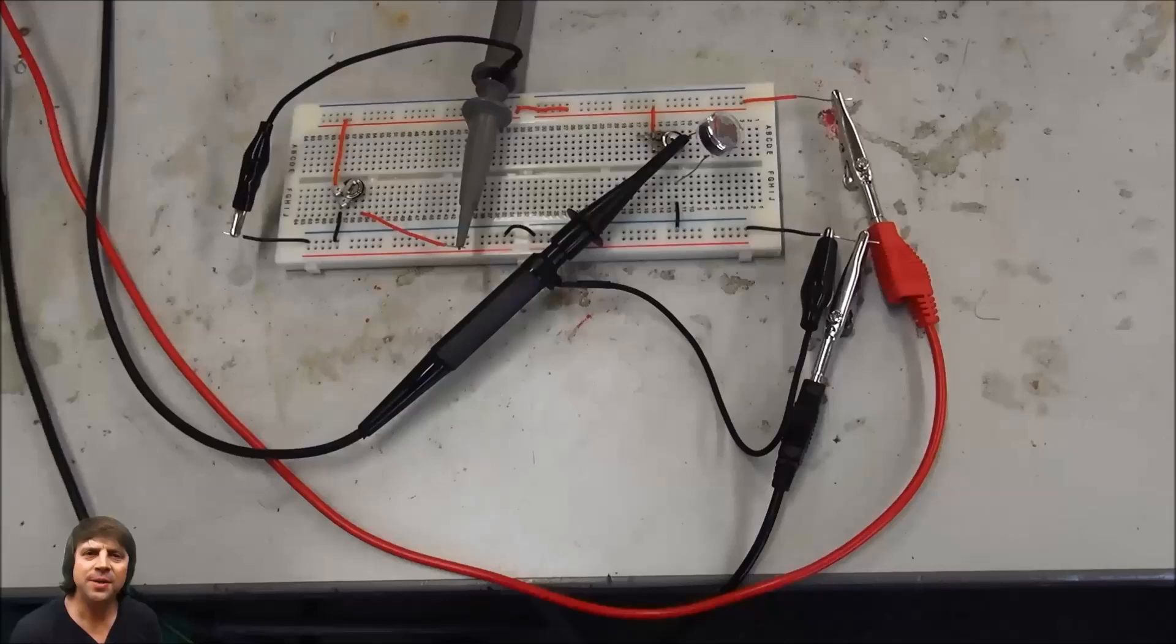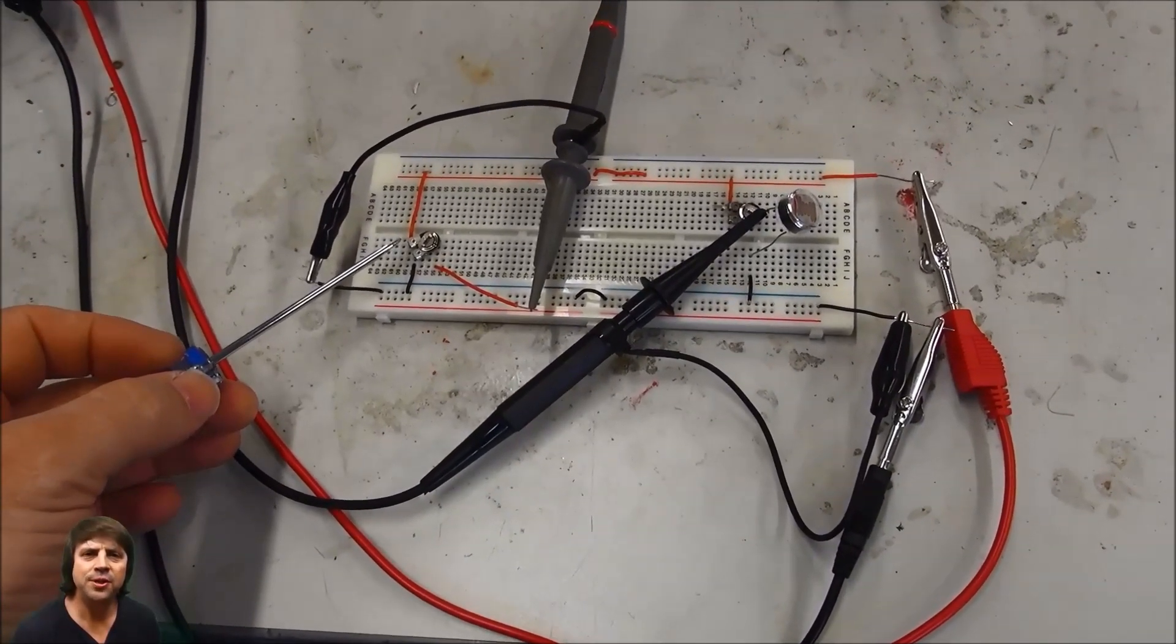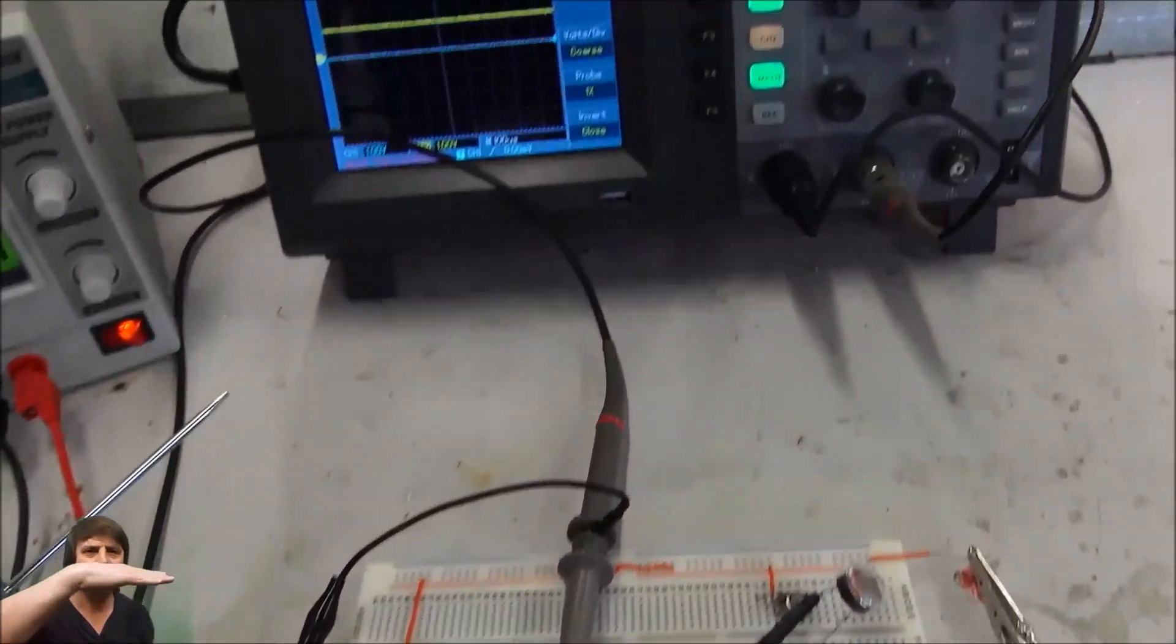Next we connect a potentiometer and the middle point of the potentiometer will be used to set a steady voltage level like so.